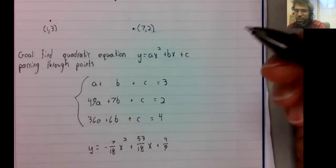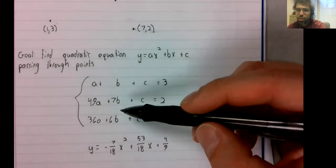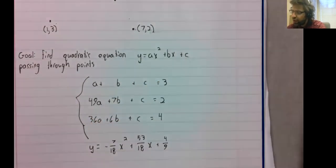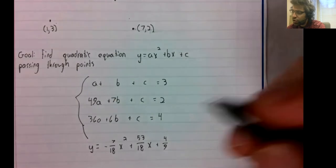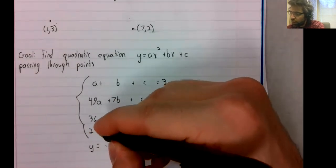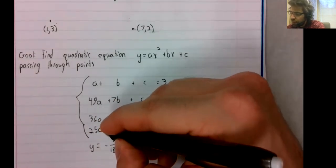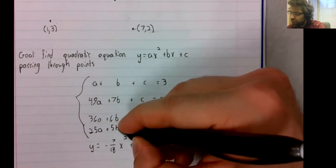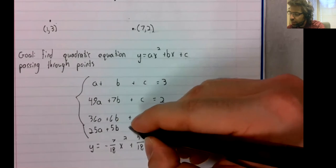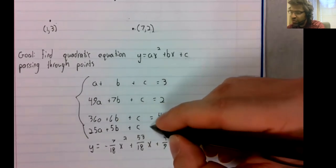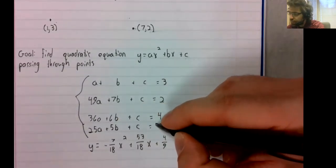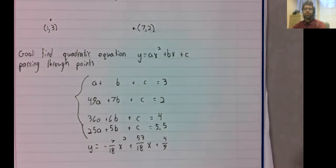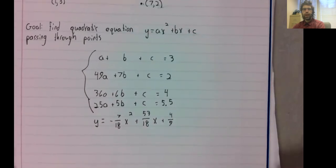But what happens to this system of equations if we add an additional number? Now we have 25A plus 5B plus C equals 5.5.